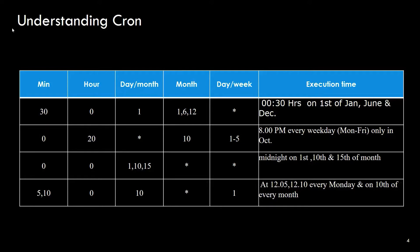Look at the second row for a typical example of running a job during the weekdays. Notice the days of the week are set to one dash five. This means that it will run on days one, two, three, four, and five — that's Monday through Friday.